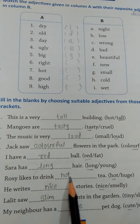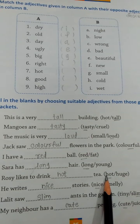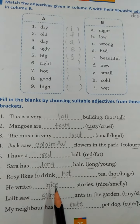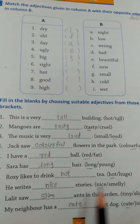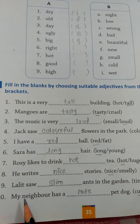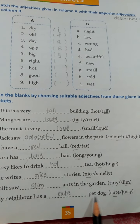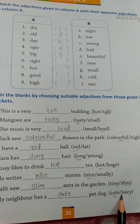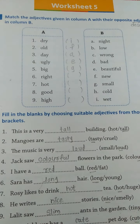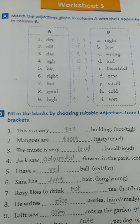Rosie likes to drink dash tea — hot or huge? Huge means very big, hot means garam. Tea cannot be huge, so we write 'hot'. Then he writes dash stories — smelly or nice? Nice story. Lalit saw a slim ant. My neighbor has a dash pet dog — cute pet dog. A dog cannot be juicy, so we use adjective 'cute' here. You have to write all of worksheet number 4 and worksheet number 5 in your textbook.